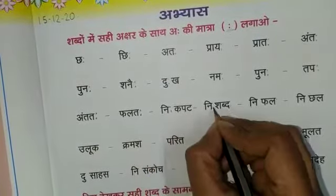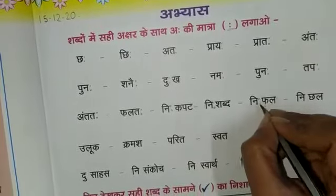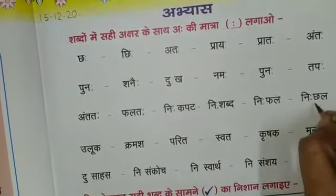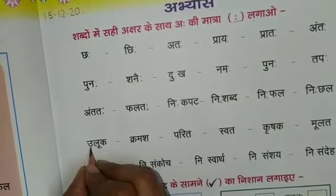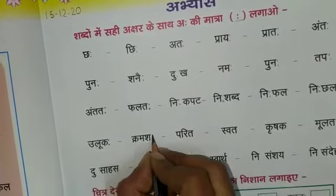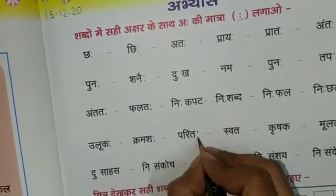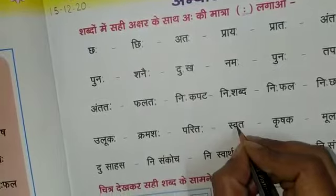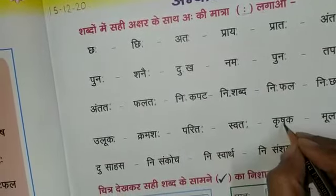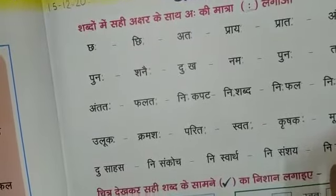Here we will write the words: पाट, निहीशाबद, निहीफाल, नहीचाल, उलुकह, क्रामाशह, पगीतह, स्वसावतह, क्रिशकह, मूलतह.